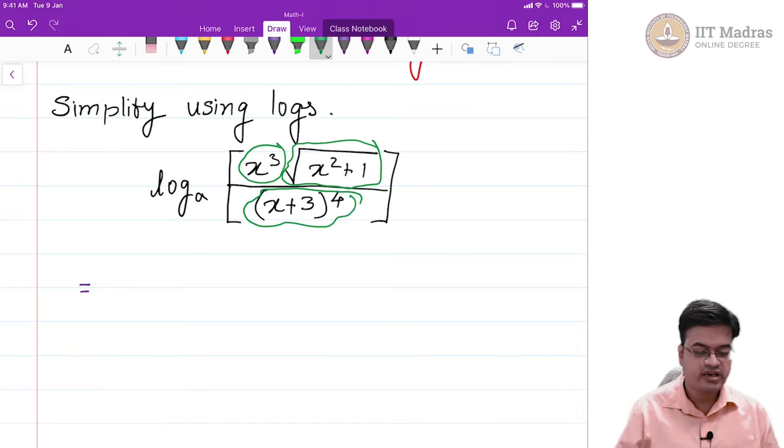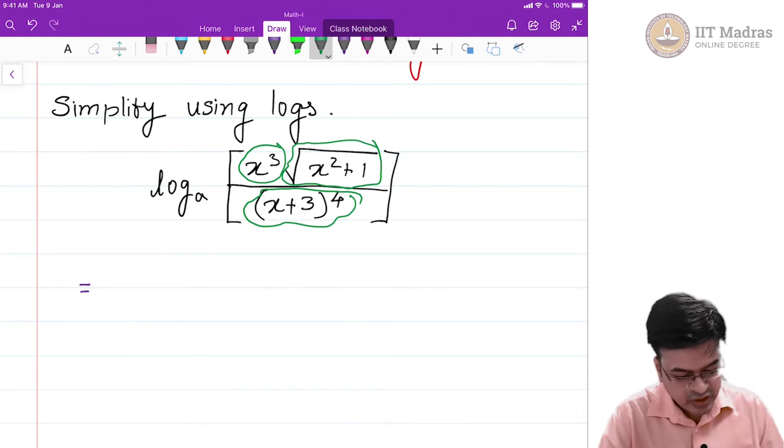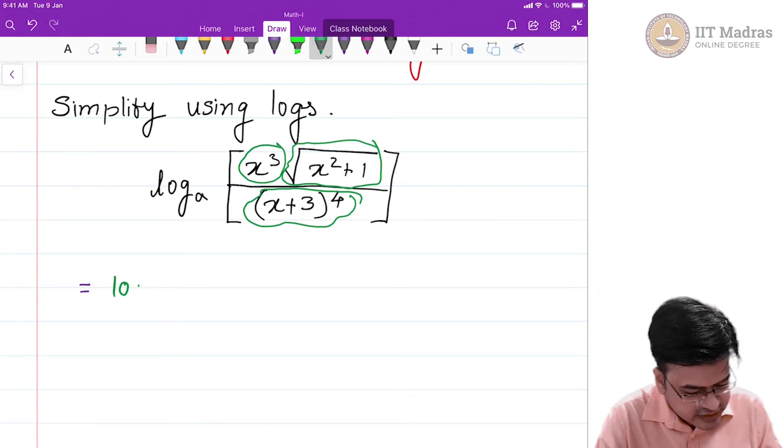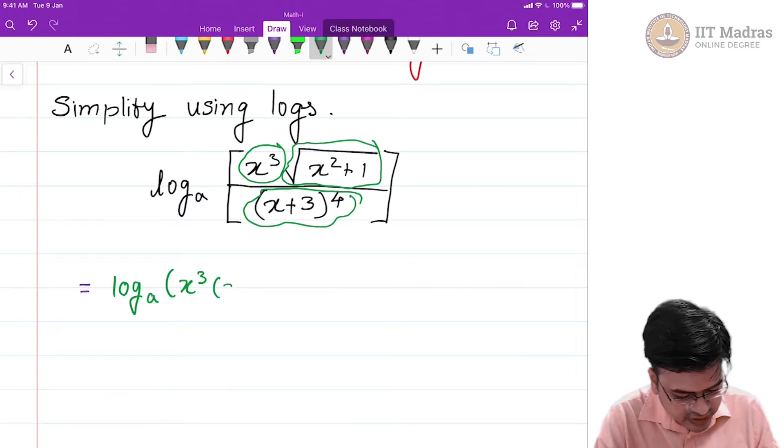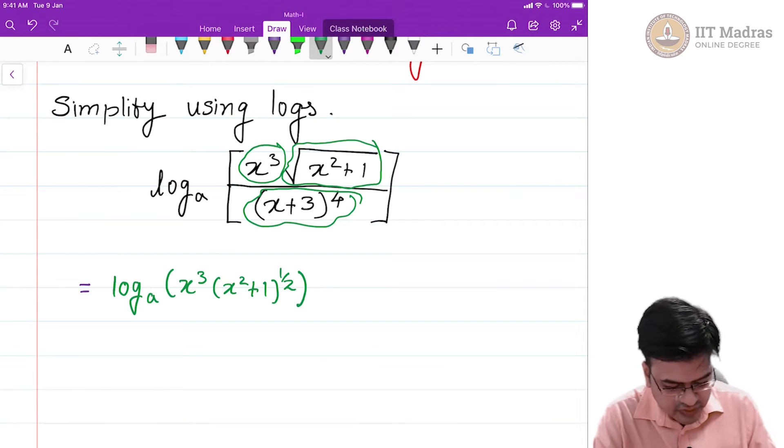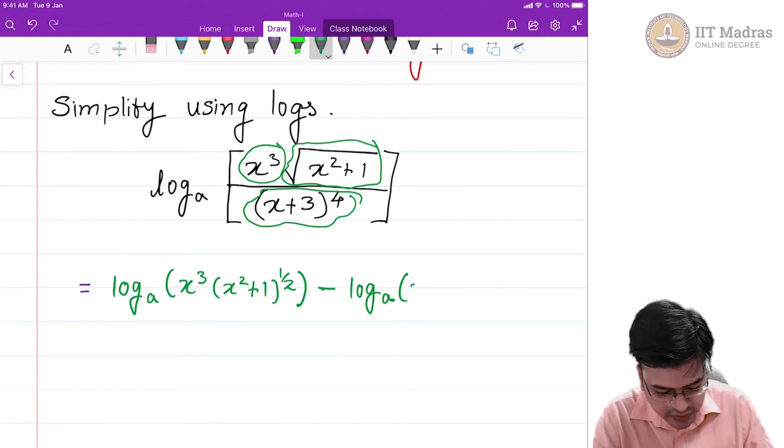I want the end result that I want to get after simplification should have 3 components. First I will apply the quotient rule that is log of m by n. In this case this fetches me log to the base a of the numerator which is x cube times x square plus 1 raise to half minus log to the base a of x plus 3 raise to 4.